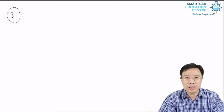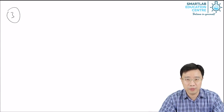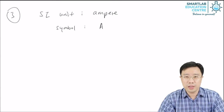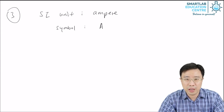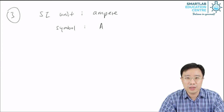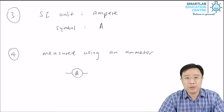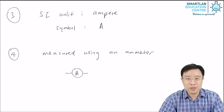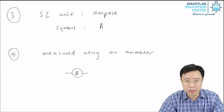An electric current is something that can be measured — it is called a physical quantity. If it is something that can be measured, there must be a unit for it. The SI unit for electric current is called the Ampere. The symbol is a capital A. The electric current is measured using an ammeter, whose symbol is a circle containing a capital A with two wires at the sides.